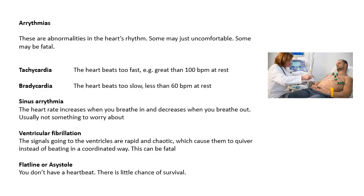Arrhythmia is an abnormality in the heart's rhythm. Some of these can just be uncomfortable, and some can be fatal. You can investigate them by doing an ECG — placing electrodes in the right place on a person's chest and looking at a trace. The ones you need to know: tachycardia, where the heart beats too fast, and bradycardia, where the heart beats too slow. Normal heart rate for a healthy person at rest is between 60 and 100 beats per minute. Greater than that at rest is tachycardia; less than that is bradycardia.